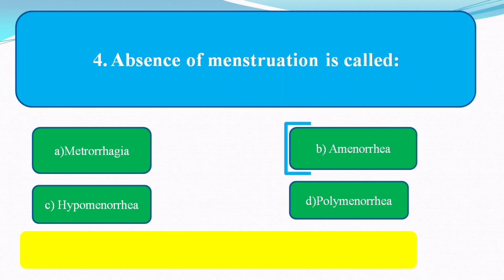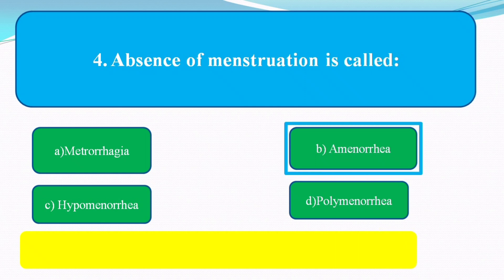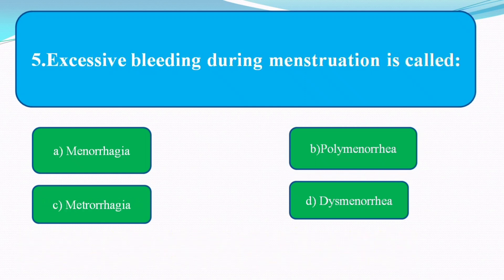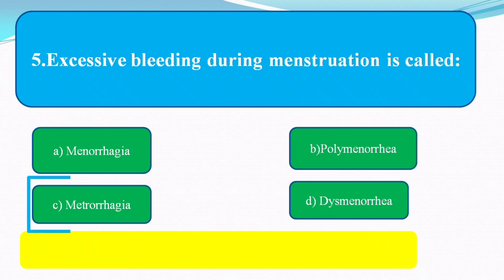The next question is: excessive bleeding during menstruation is called? The answer is metrorrhagia.